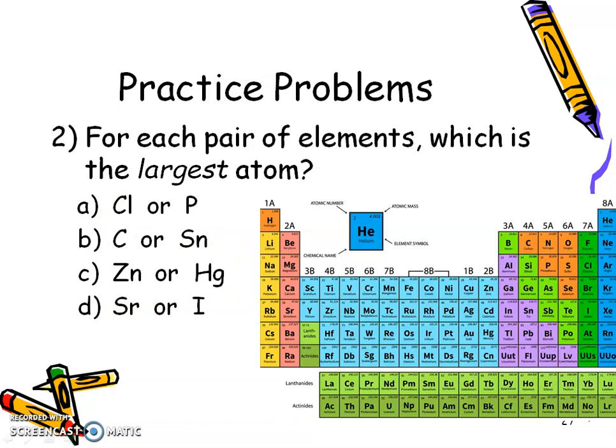How about going the other way? Now I'm asking you between the pairs, which one's going to be the largest atom? Again, pause the video and find chlorine and phosphorus. Hopefully you found them here. And out of those two, they're in the same period. So going across, you get smaller, but we're looking for the larger guy. So you should circle phosphorus.